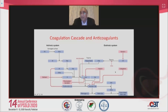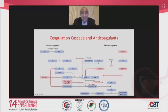The normal coagulation cascade and sites of action of various anticoagulants: heparin and dabigatran (a DOAC) act directly on thrombin; warfarin works through vitamin K-dependent coagulation factors 2, 7, 9, and 10. Rivaroxaban, apixaban, and edoxaban act as direct anti-Xa inhibitors.